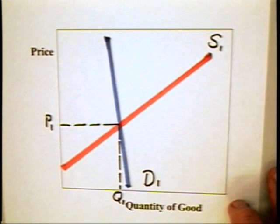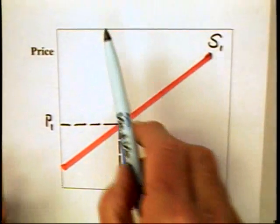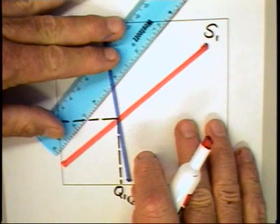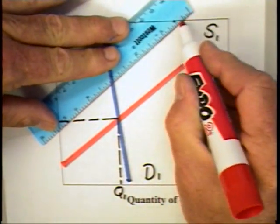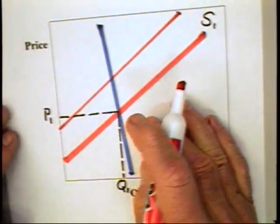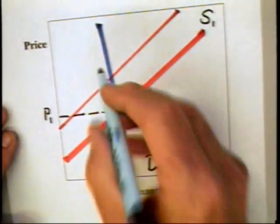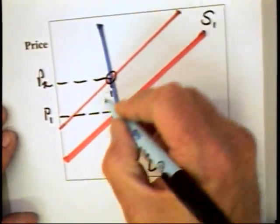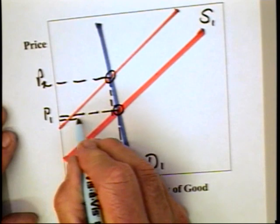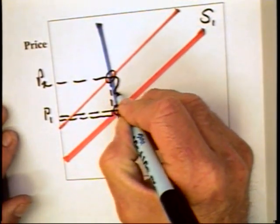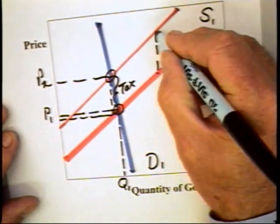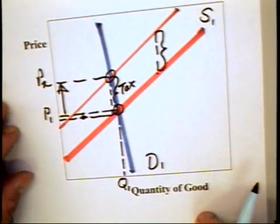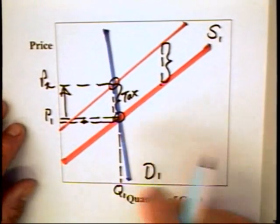We have what we call a highly inelastic demand curve, almost vertical demand curve. If we impose this excise tax on this good, note what is true. That is, the price goes from P1 to P2, and this means that the increase in the price is very close to the tax, which is equal to this vertical distance here or this vertical distance there. The price to consumers goes up. The price that producers receive after the tax goes down, but not very much. In this case, the consumers bear a large percentage of the tax.